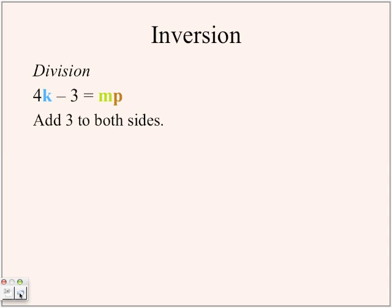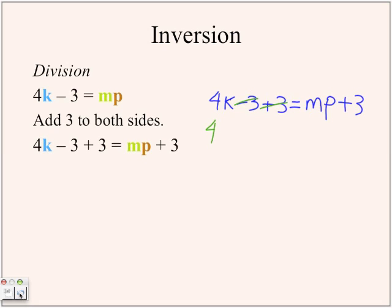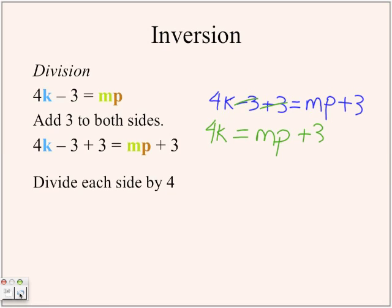In this equation, to get the value of k, you have 4k minus 3 equals mp, with three variables: k, m, and p. You're going to add 3 to both sides, which cancels out the minus 3, and you're left with 4k equals mp plus 3.